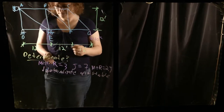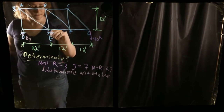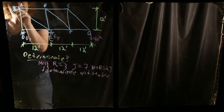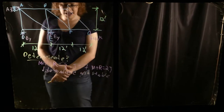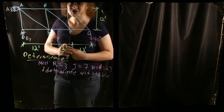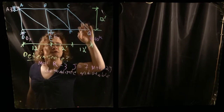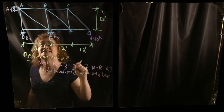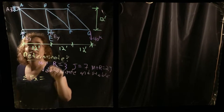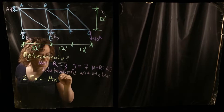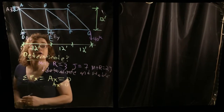Now I need to get my reaction forces. I'll label them as Dy, Ey, and Ax. I can knock out Ax quickly by doing a summation of forces in the horizontal direction. The only force in the x direction is Ax, so Ax equals zero.